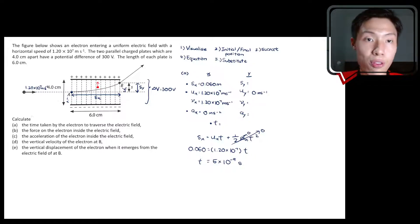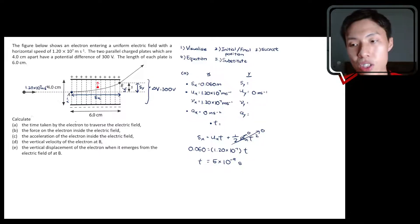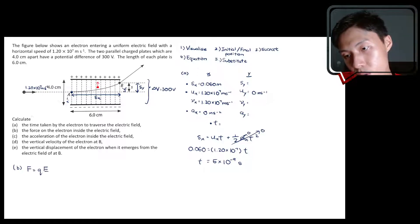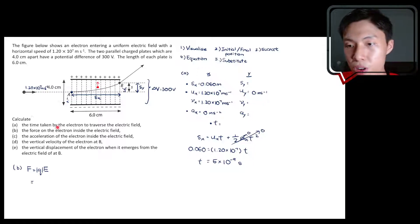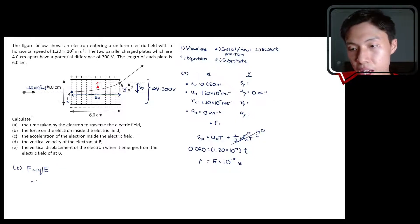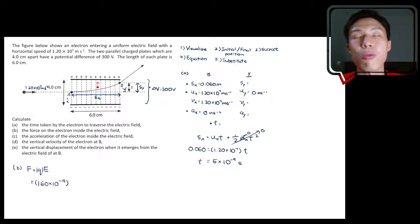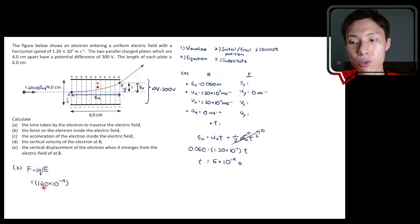Moving on to question B, which asks for the force. To determine the force, you need to know the magnitude of the electric field and the charge experiencing the force, which is the electron. The magnitude of the electron charge is 1.60 times 10 to the power of negative 19 coulombs.